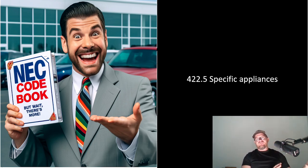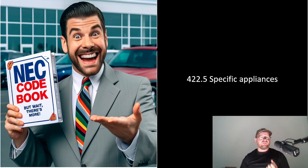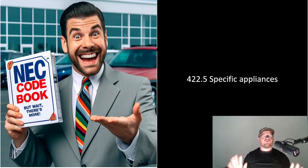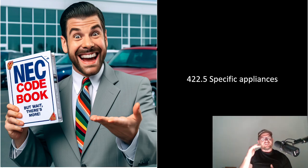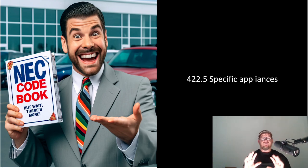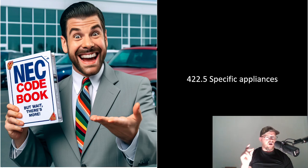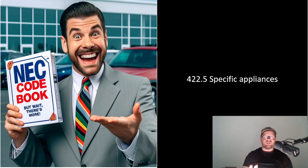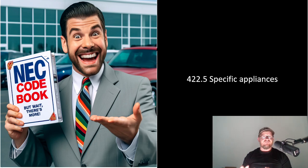It says that on top of everything in 210.8, these specific appliances — regardless of whether it's in a dwelling unit or other than dwelling units — also require GFCI protection. You have to watch out for this one; it's a very important code section, and it has expanded every cycle from 2017 to 2020 to 2023. It covers a lot more specific appliances — call-out items like ranges and dryers. Just make sure you're covering everything in 210.8 and then everything in 422.5.